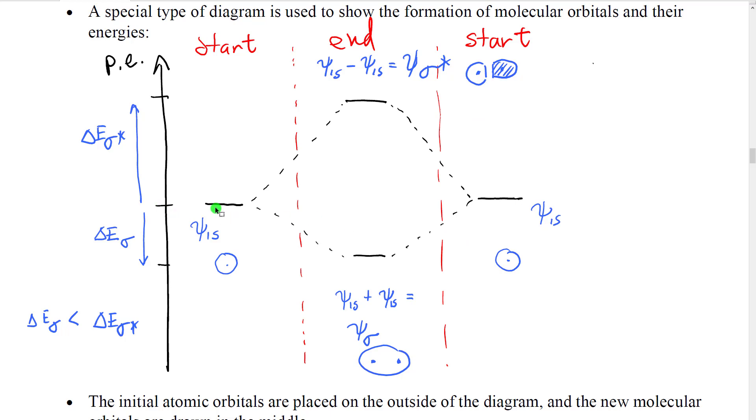Now, the other thing we do is we draw lines to indicate our starting energy levels, which basically also indicates then our starting orbitals. So, this line represents the energy of the ψ 1s of a hydrogen, and this is the shape of that ψ 1s. This line also represents a ψ 1s of a hydrogen, and that's its shape. And the interesting thing is we draw the starting orbitals on the outside.